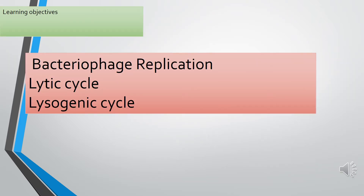The learning objectives are bacteriophage replication by the process of lytic cycle and lysogenic cycle. Bacteriophage replicates and multiplies inside the bacterial cell by two methods. First is the lytic cycle — lytic means breakdown — where the bacteriophage breaks down the bacterial cell. The second is the lysogenic cycle, where the host cell is not killed, but the bacteriophage genome integrates with the bacterial genome, forming a structure known as prophage, which we will discuss in detail.